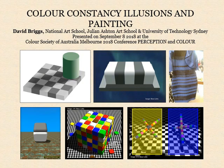In this video I'll be taking a fresh look at colour constancy illusions, what they do and don't tell us about visual perception, and how they illustrate a basic practical difficulty involved in painting appearances. The lecture was first presented at the Colour Society of Australia Melbourne 2018 conference, Perception and Colour.